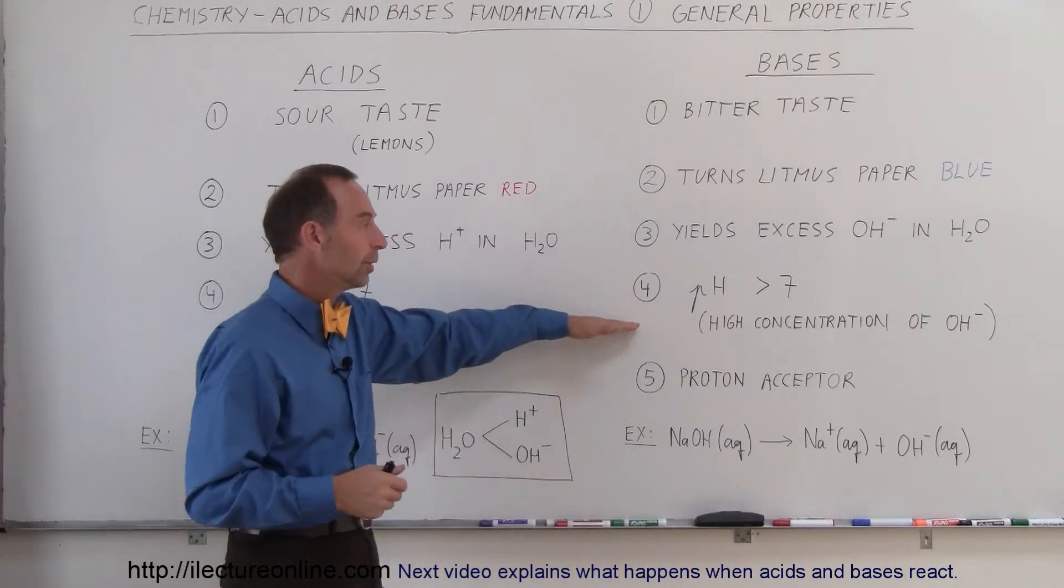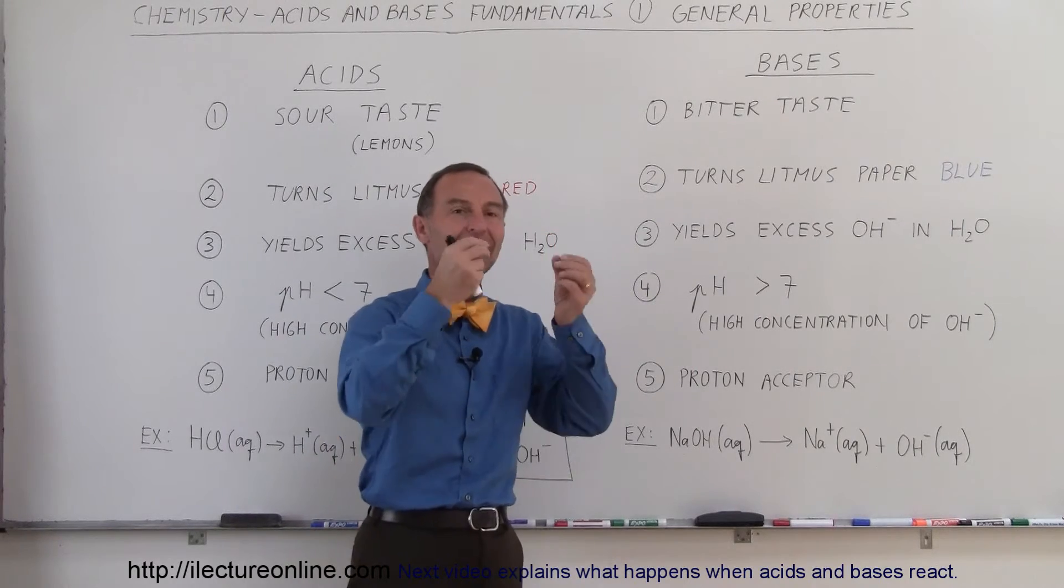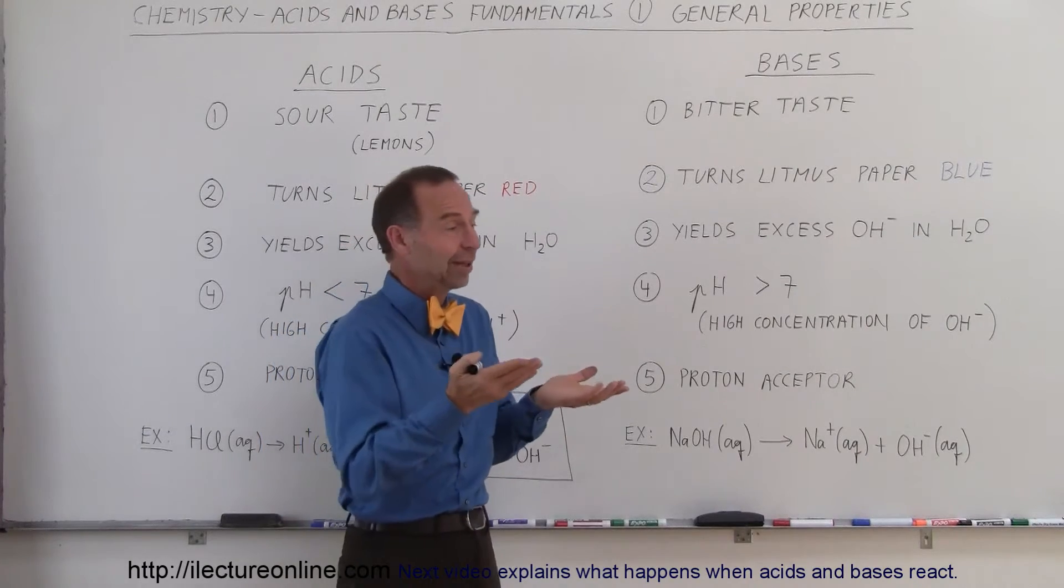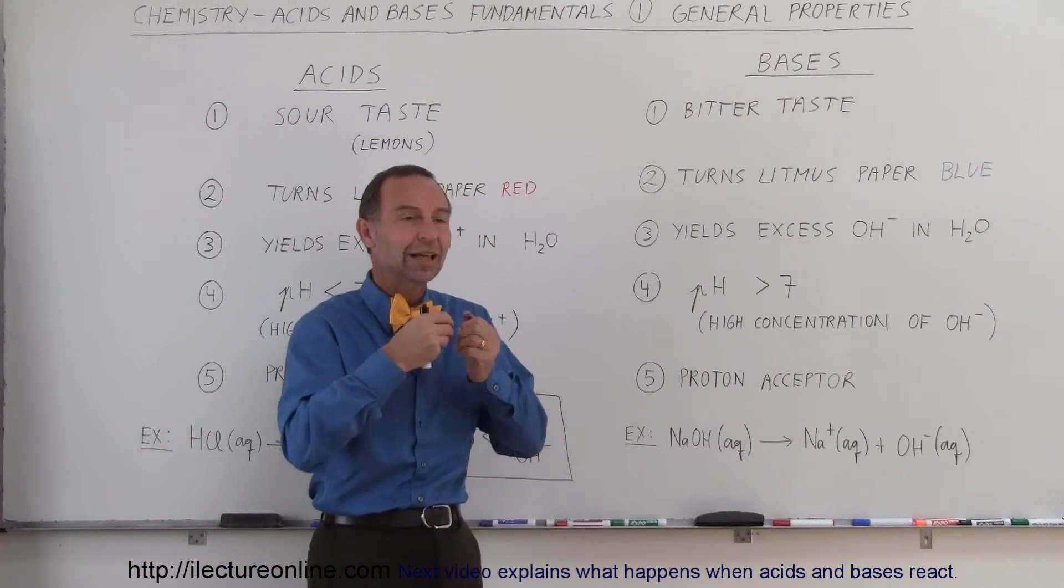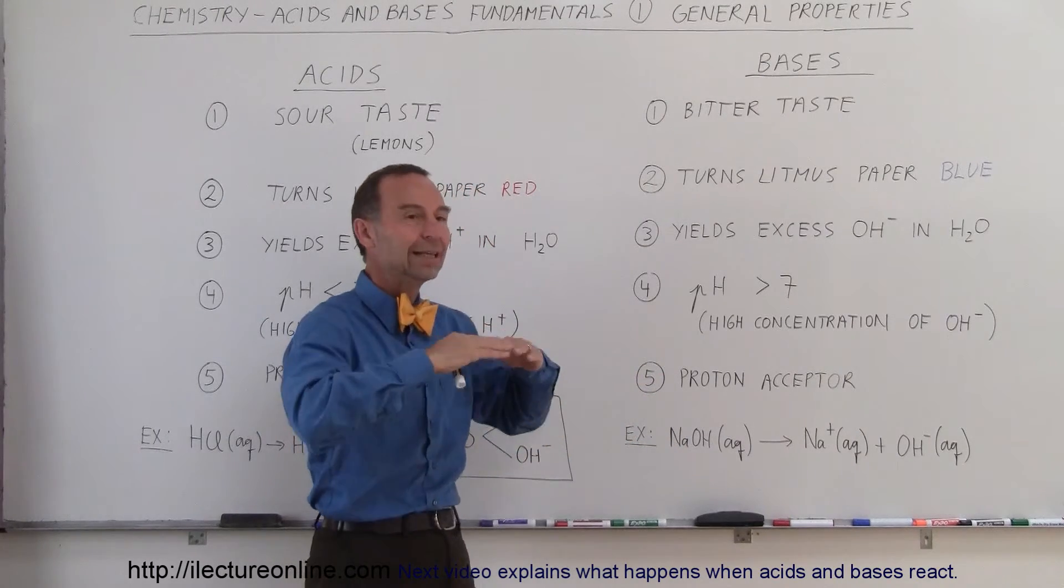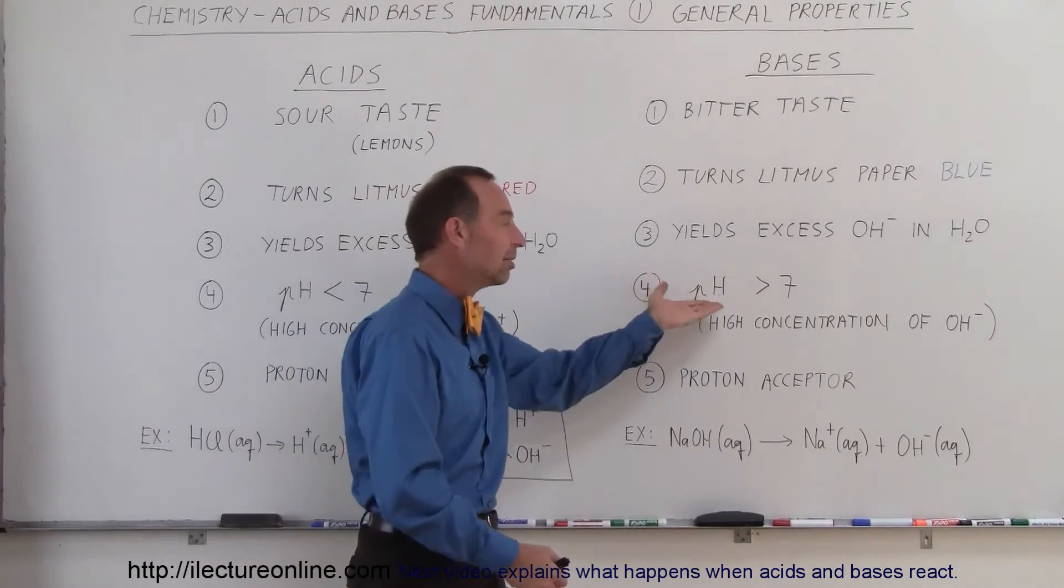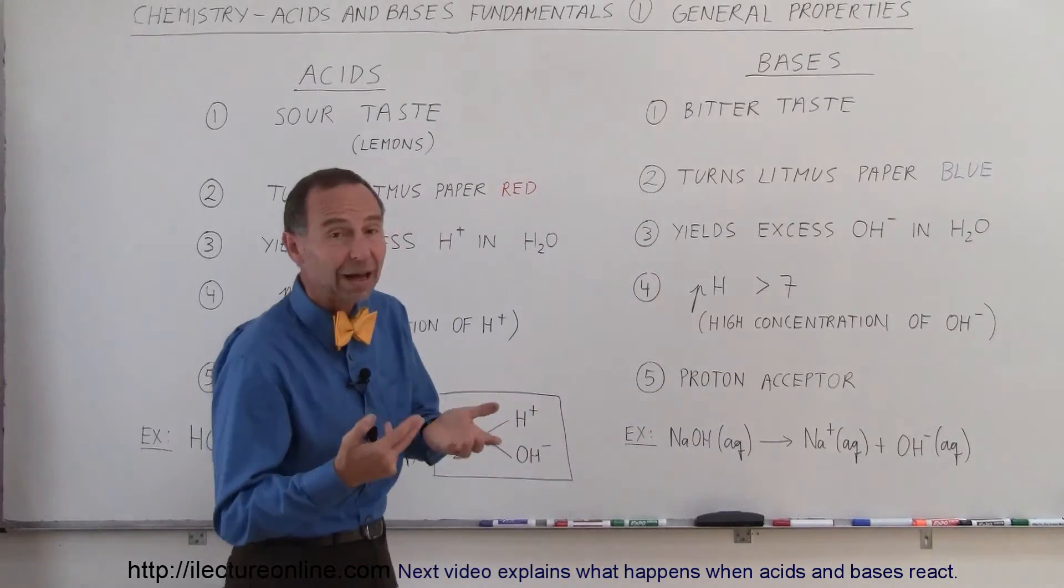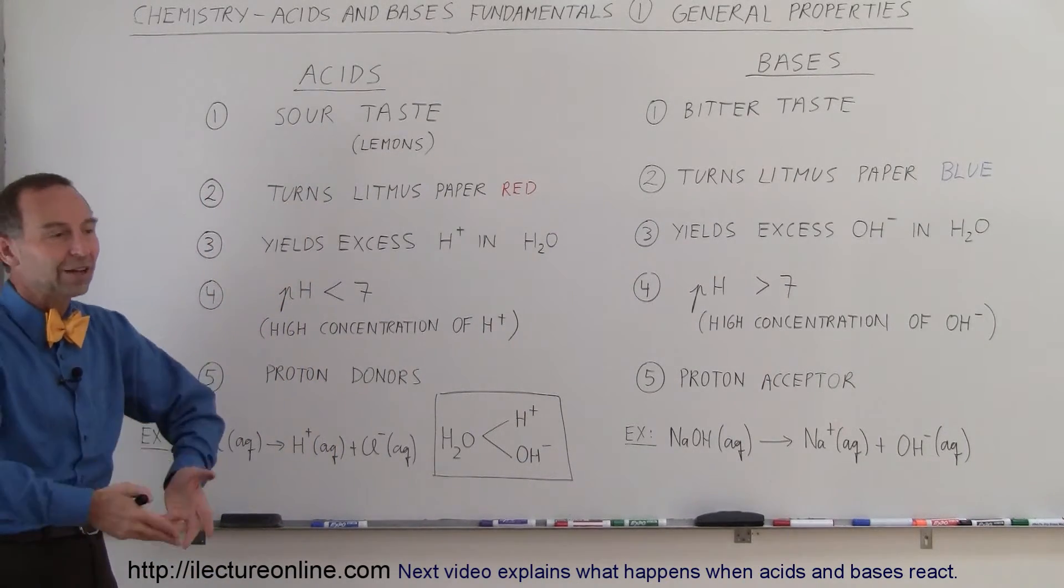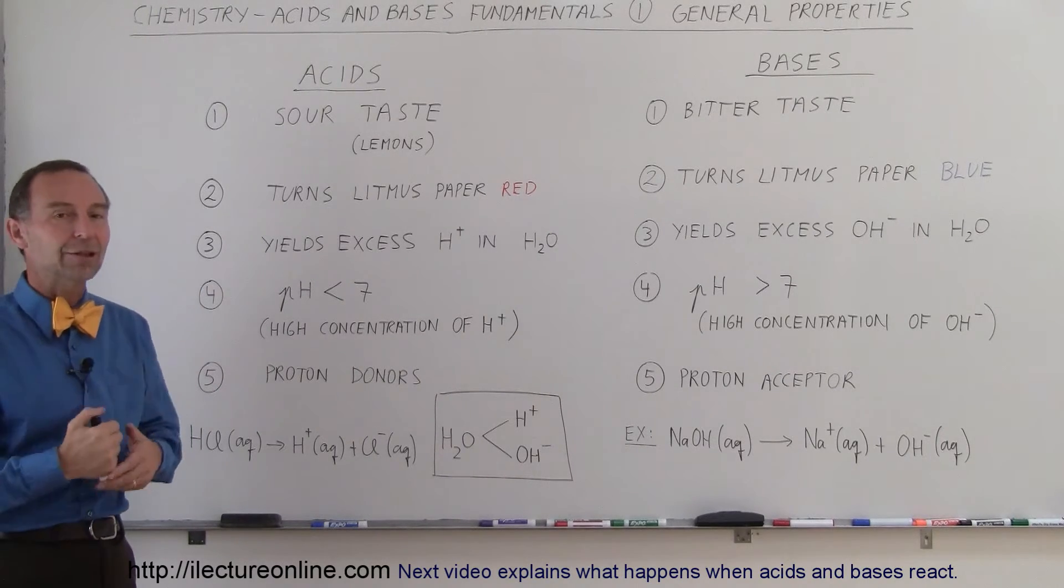On the other hand, if you're dealing with a base, the pH will be greater than 7 because a greater number means less hydrogen ions in the solution. Since a base takes hydrogen ions out of the solution and puts hydroxide ions into the solution, the amount of hydrogen ions in solution gets to be lower, so therefore the pH goes up. So the pH is simply a measure of the number of hydrogen ions in the solution. Lots of hydrogen ions, low pH; few hydrogen ions, high pH.